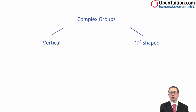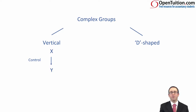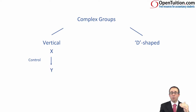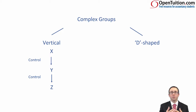If we look at a vertical group structure first, imagine we have a company X, which will ultimately be the parent, and X has control over Y, the subsidiary. What becomes complex is that instead of the parent having the investment in the sub, what also now happens is that Y has an investment in another entity, Z, and that investment gives Y control.